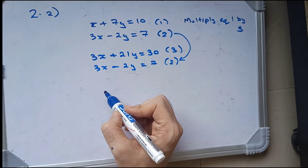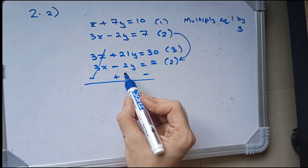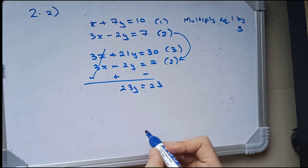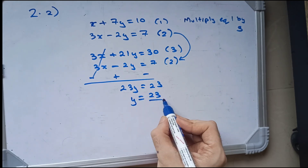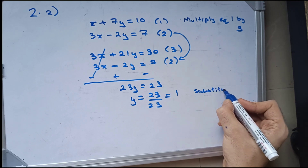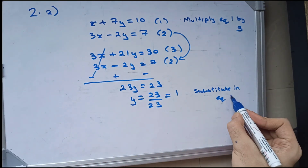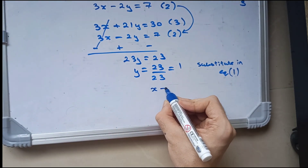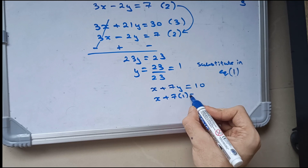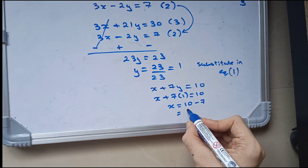Now solve the simultaneous equations. 3x and 3x cancel. We get 23y, and 30 minus 7 is 23. y is equal to 23 upon 23, which is going to be 1. Substituting y in equation 1, which is x plus 7y equal to 10, we get x plus 7 into 1 equal to 10. 7 into 1 is 7, so x is equal to 10 minus 7, and x is 3.